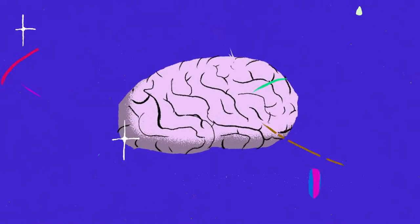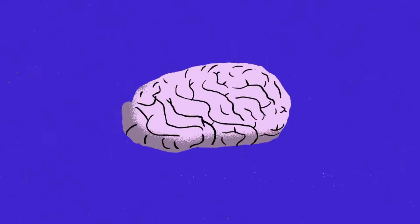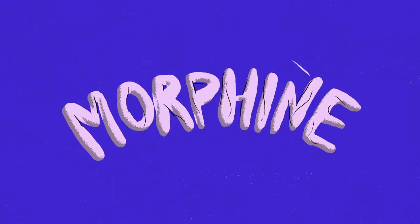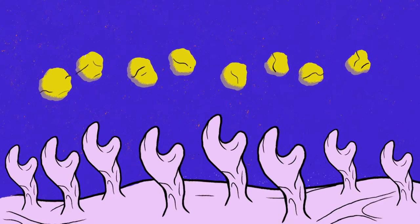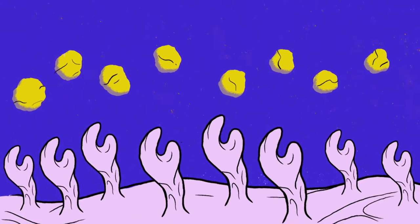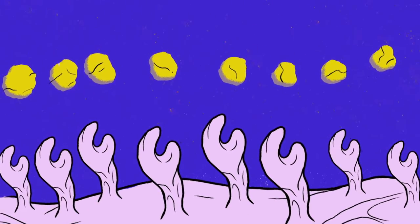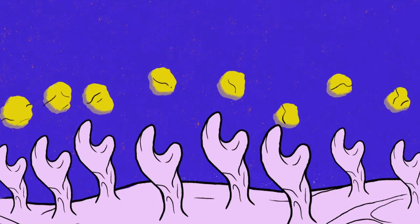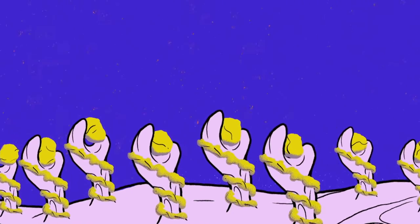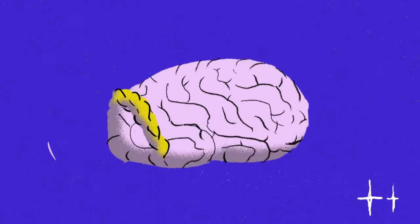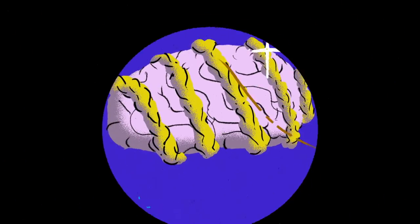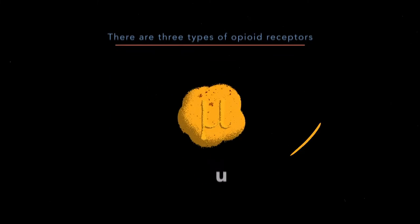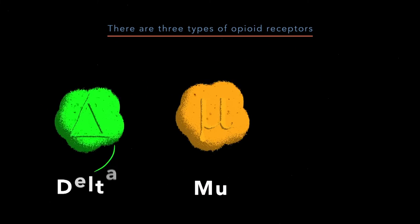Heroin derives its effects from being converted in the brain to morphine, which then binds to and activates the opioid receptors in the brain. The receptors are specialized proteins located on the surfaces of cells. Opioids latch onto the receptors and trigger effects in the cells. There are three types of opioid receptors: mu, delta, and kappa.